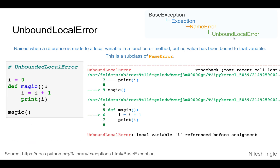UnboundLocalError is derived from the NameError, which in turn is derived from the Exception class. This is raised when a reference is made to a local variable in a function or method, but no value has been bound to that variable.